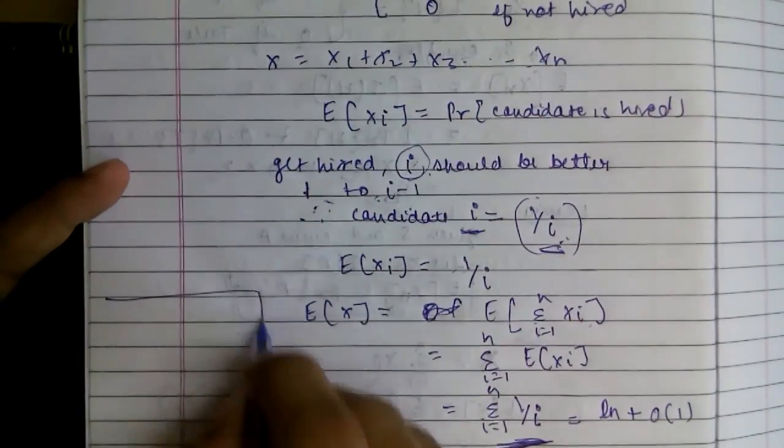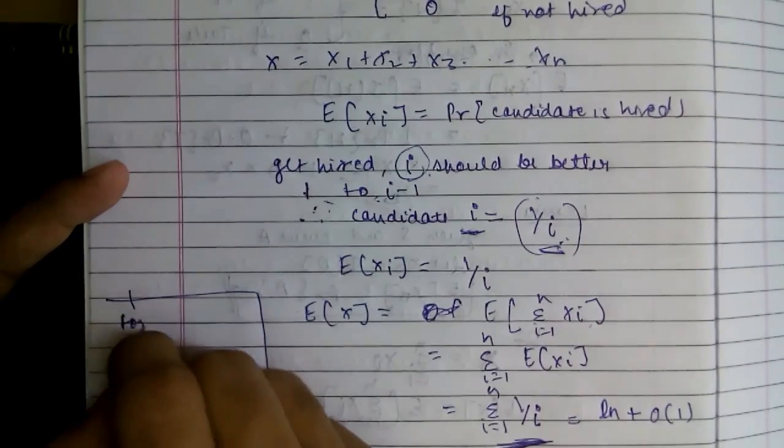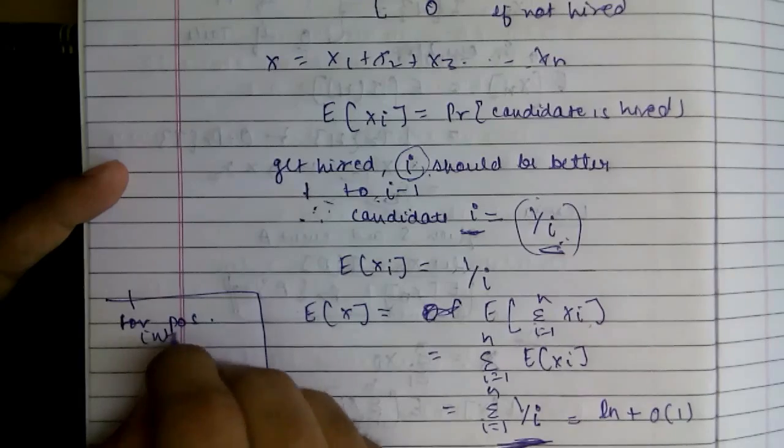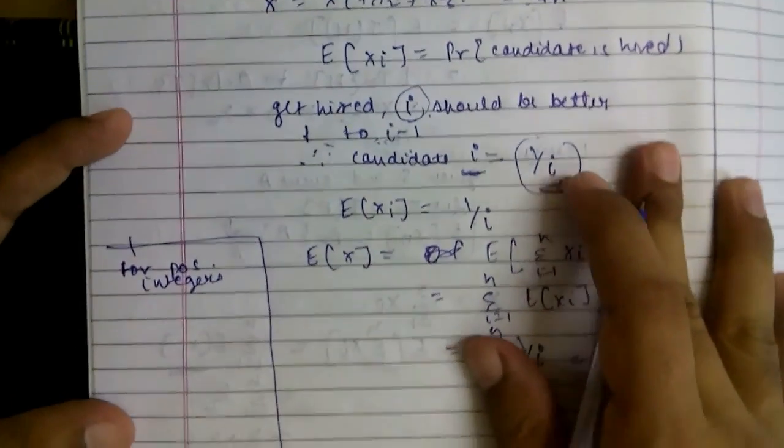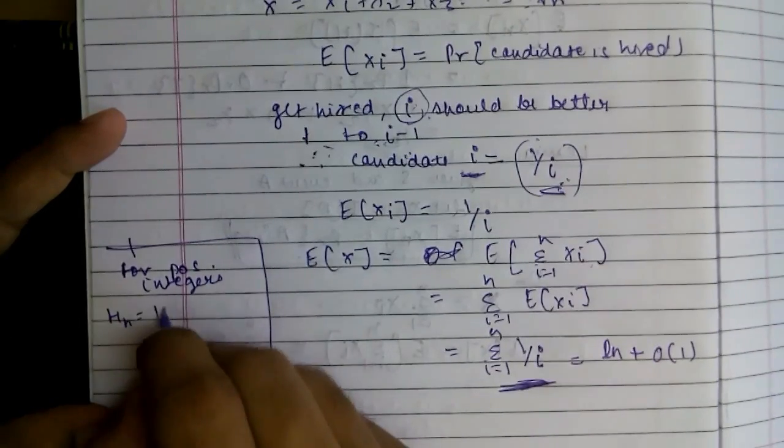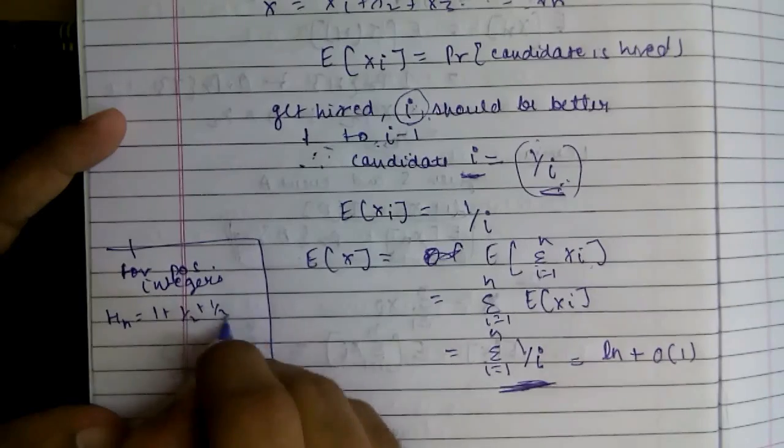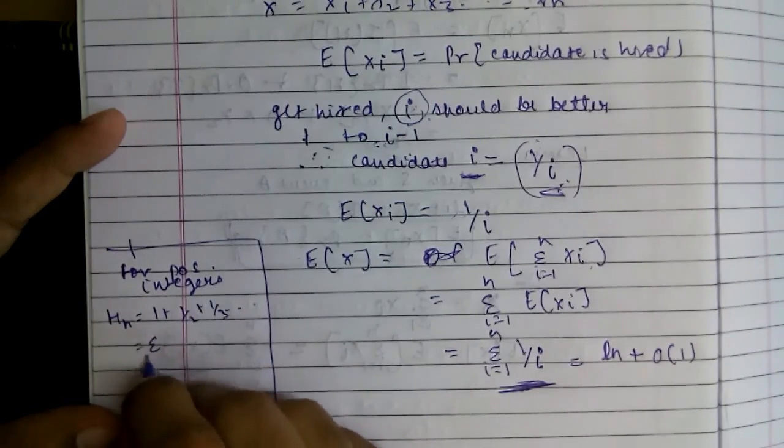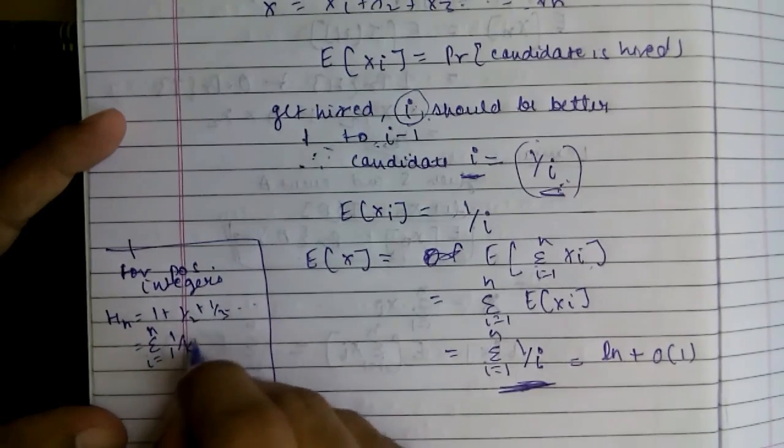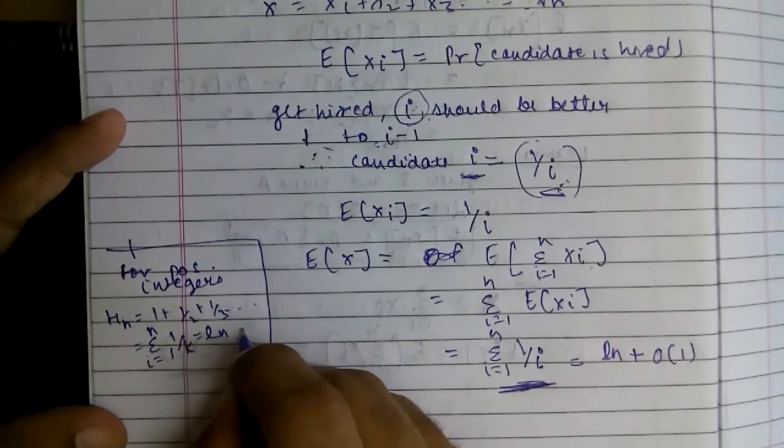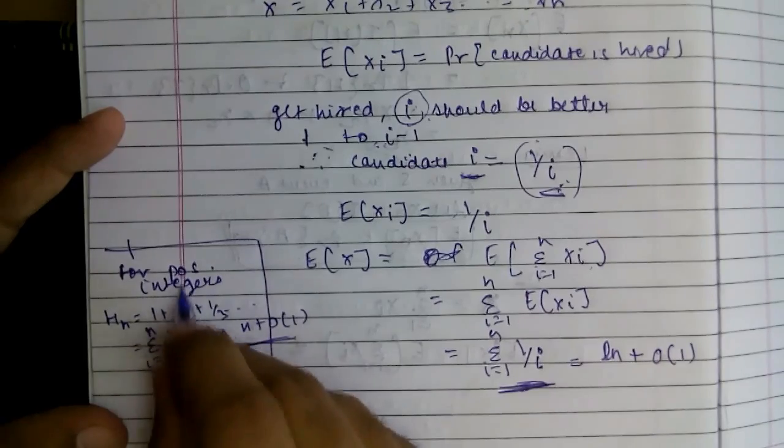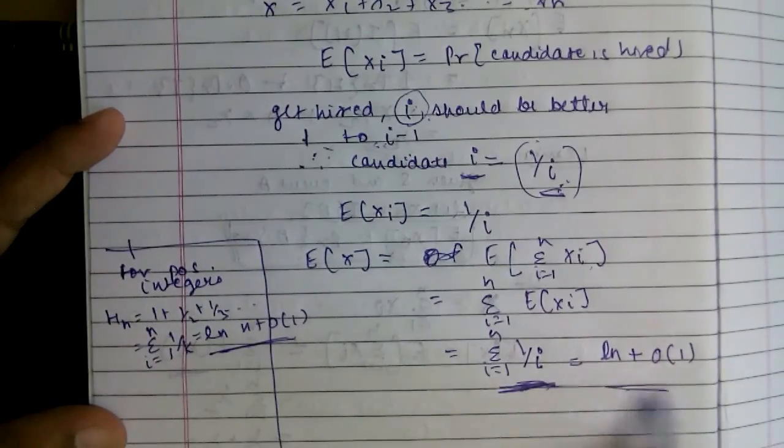As you may or may not be knowing, for positive integers, the H_n, that is the nth harmonic, that is 1 plus 1 by 2 plus 1 by 3 and so on, sigma from 1 to n of 1 by k, is log of n plus O of 1. So by nth harmonic we got this.